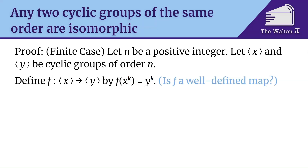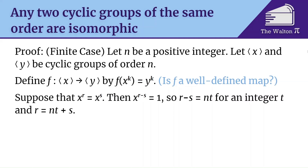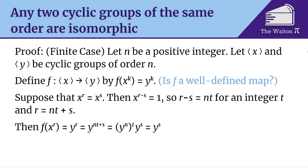First we have to show this is a well-defined map. Suppose that x to the r equals x to the s. For example if n is 7, then x to the 3 and x to the 10 are the same element, so we have to show they map to the same thing in the group generated by y. If x to the r equals x to the s, then x to the r minus s is 1, so r minus s is a multiple of n, meaning r equals n times t plus s. Then f of x to the r is y to the r, which is y to the nt plus s, which equals y to the n to the t times y to the s. Since y to the n is 1, this is just y to the s, which is f of x to the s. So f is well-defined.